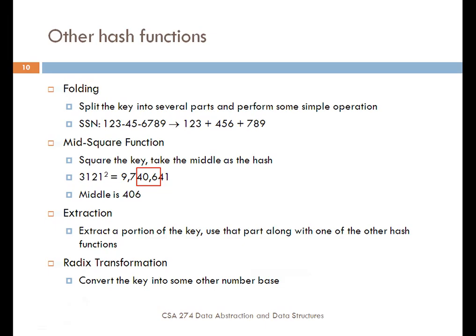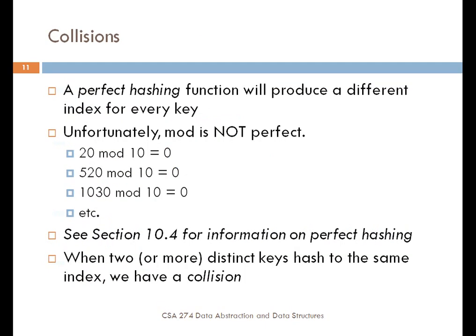The thing to point out here is that the hash function computes where an element is going to be stored in an array. Using this function, there's a unique place where the element should be stored. There's this thing called a perfect hashing function which will produce a different index for every possible key. Unfortunately, creating a perfect hash function isn't trivial and they can be computationally expensive.